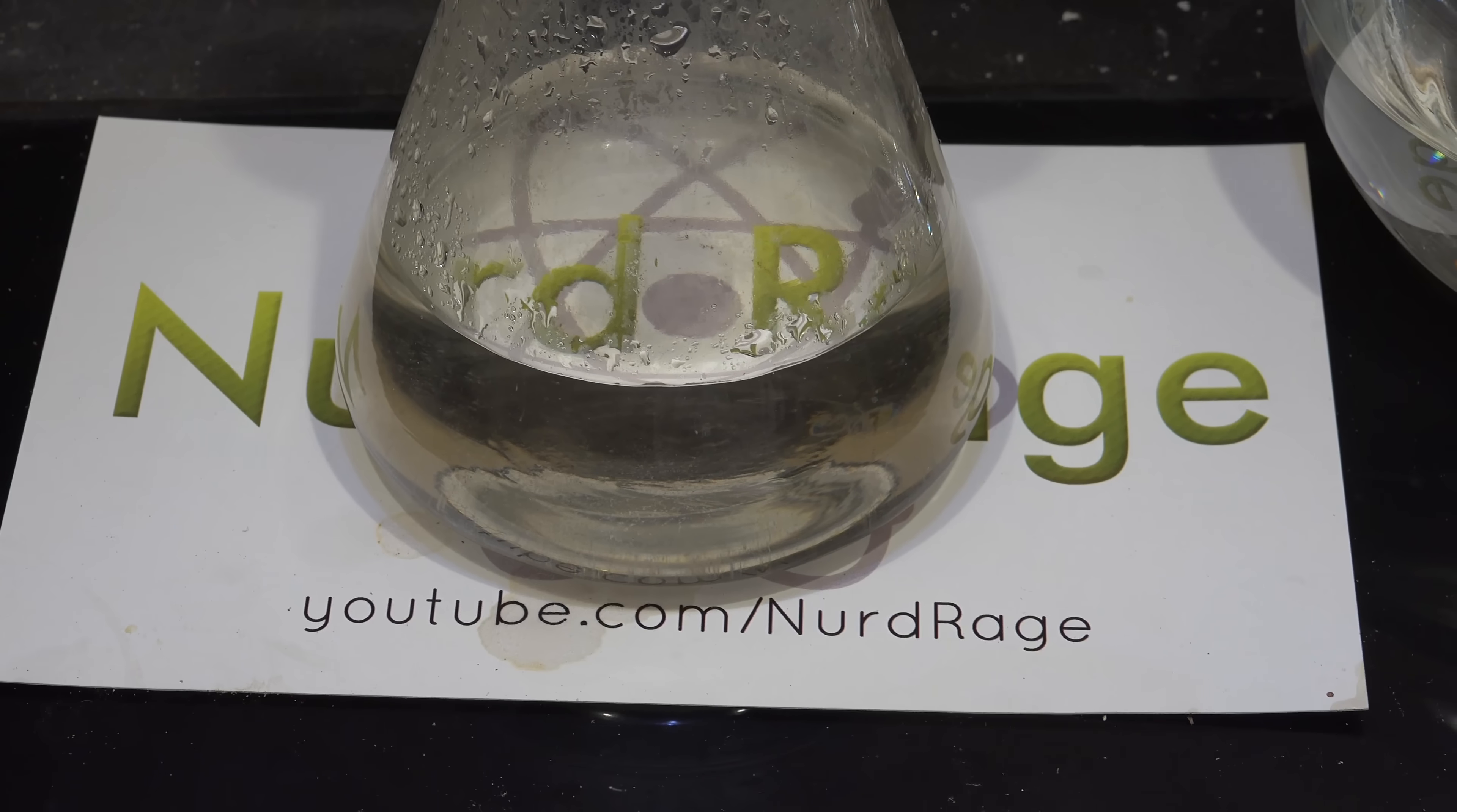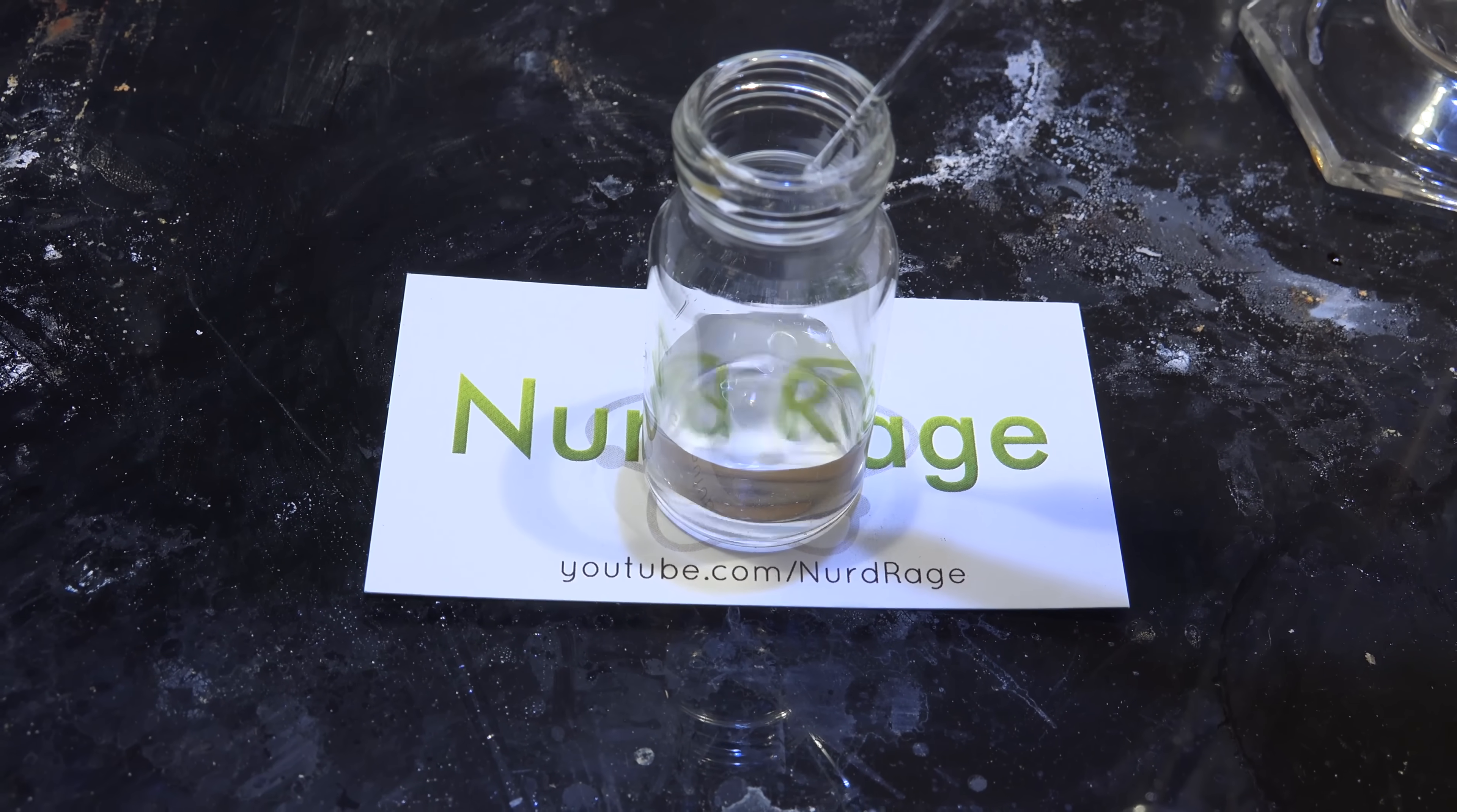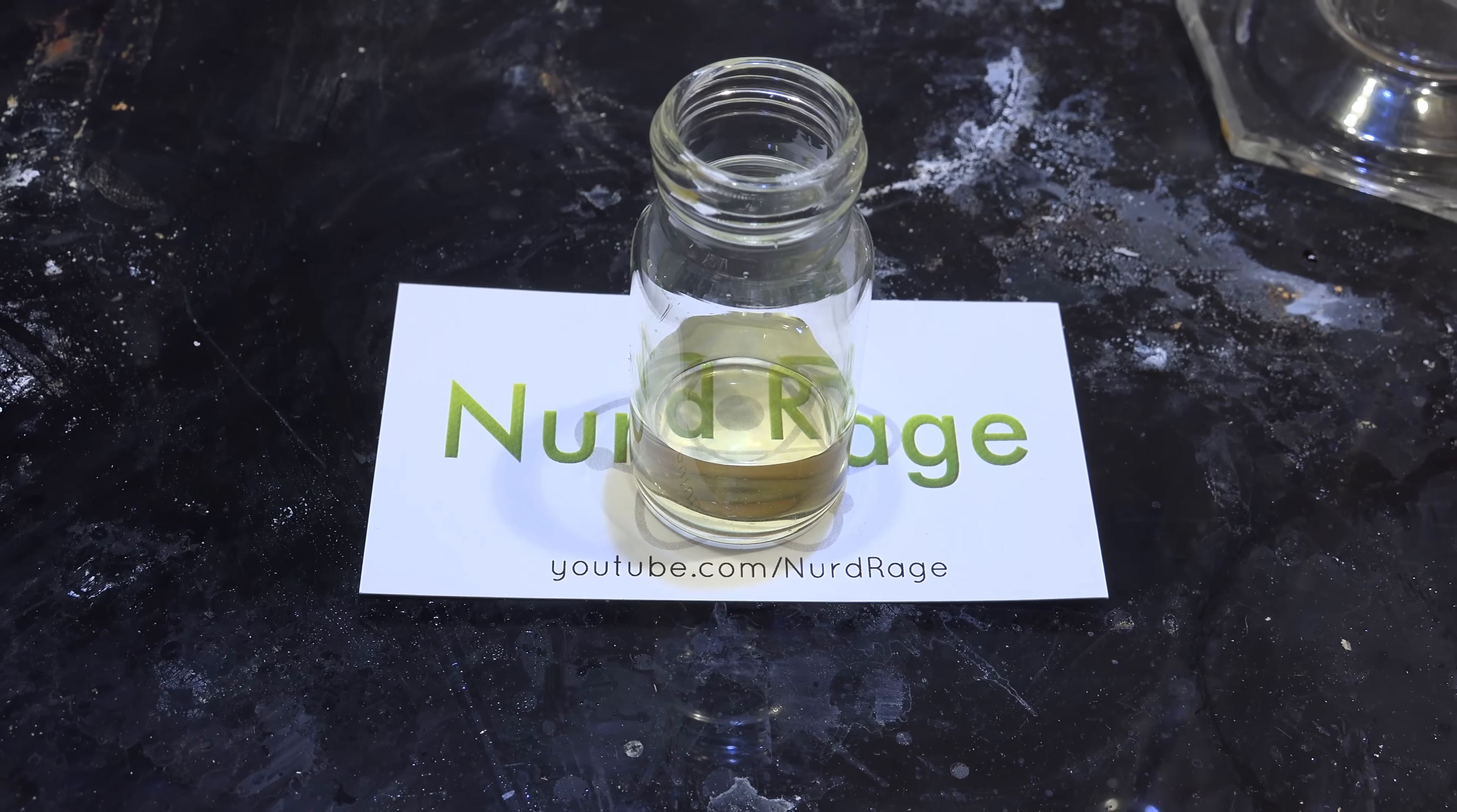Anyway, and there we have our purified hydrobromic acid. A simple test to authenticate it is to take a sample and add a few drops of hydrogen peroxide.